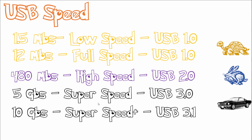Let's take a look at USB speed. USB 1.0 can throttle between low speed and full speed, from 1.5 Mbps to around 12 Mbps. USB 2.0 allows high speed of 480 Mbps. USB 3.0 allows 5 Gbps, and USB 3.1 can go up to a whopping 10 Gbps — this is called SuperSpeed Plus.